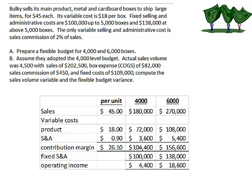This is our flexible budget. It's called a flexible budget because it's a budget at more than one level of activity — here, 4,000 boxes and 6,000 boxes.